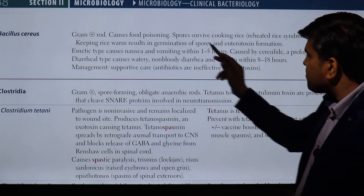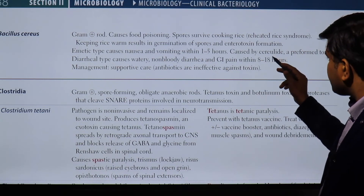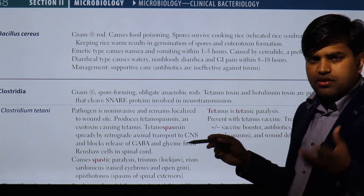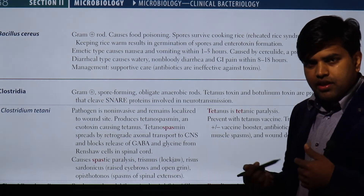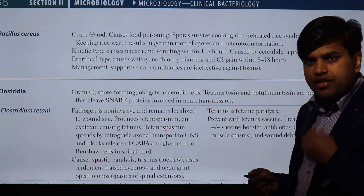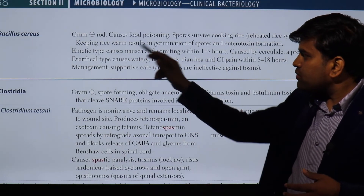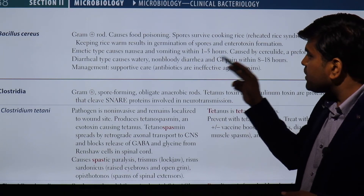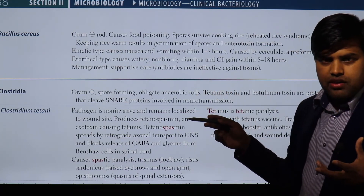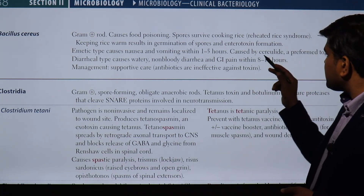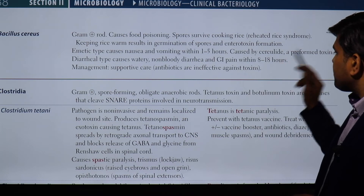There are two types of Bacillus cereus food poisoning. The emetic type causes nausea and vomiting within one to five hours. This is caused by cereulide, a preformed heat-stable toxin already present in the food. When ingested, this toxin enters the stomach, stimulates the enteric nervous system, and rapidly triggers nausea and vomiting — hence the short incubation period.